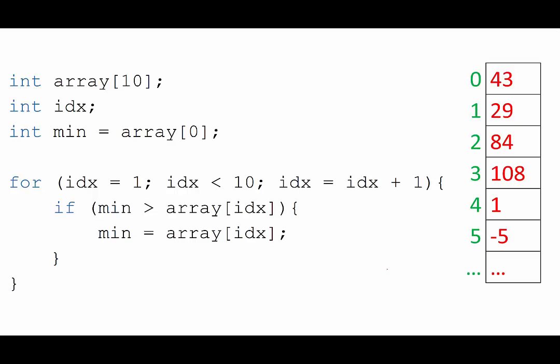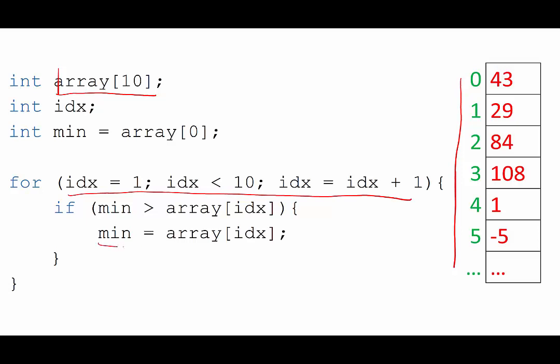In this example design problem, we will design a finite state machine that controls the data path to implement the C code shown on the screen. This code creates a 10-element array, and we will traverse this array to find the minimum value in the array.